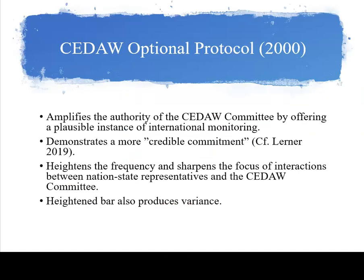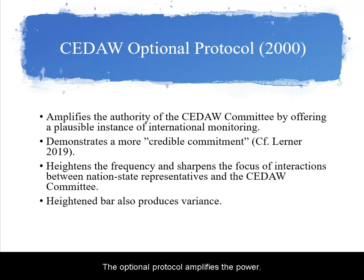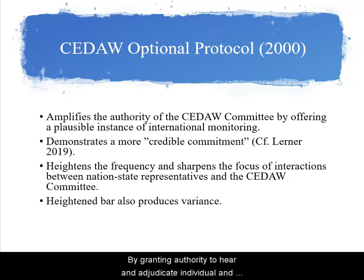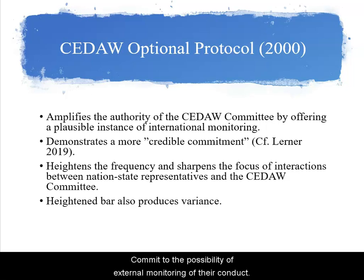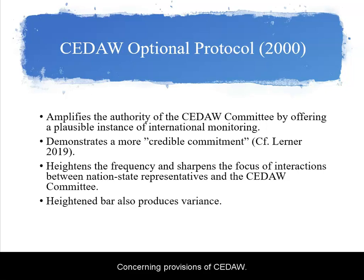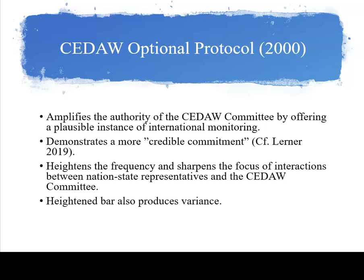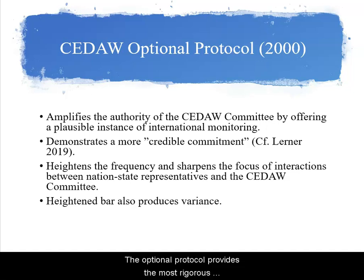The CEDAW OP enhances the influence of CEDAW in three ways. First, the Optional Protocol amplifies the power and authority of the CEDAW committee by granting authority to hear and adjudicate individual and group grievances. Wade Cole, in his early study of human rights covenants, noted with respect to the International Covenant on Civil and Political Rights that the Optional Protocol provides the most rigorous monitoring provisions available.